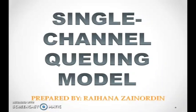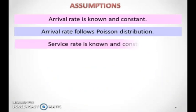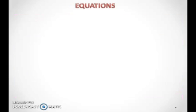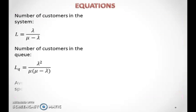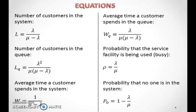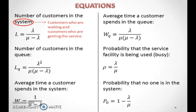Single-channel queuing model. In order to use the single-channel queuing model, the following assumptions need to be made. Here are the single-channel queuing equations. Note that customers in the system refer to customers who are waiting and customers who are getting the service, while customers in the queue refer to customers who are waiting only.